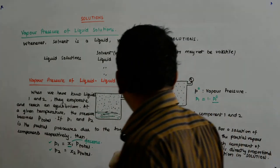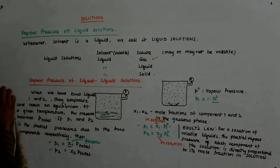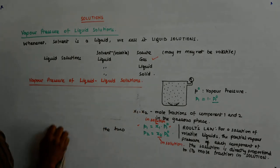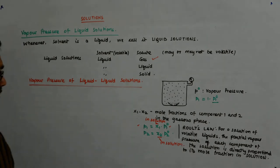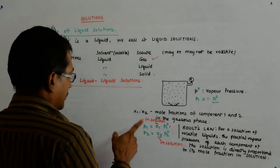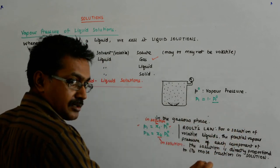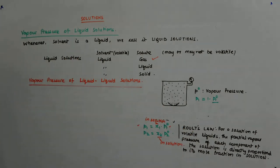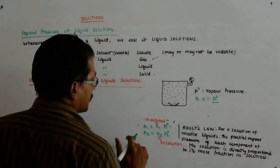So the total pressure that is built here — inside that closed chamber — x1 and x2 here are the mole fractions in the solution state. This is very important. Here x1 and x2 are mole fractions in the solution state, not the gaseous phase.